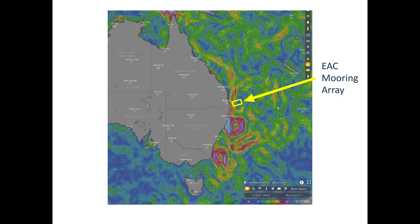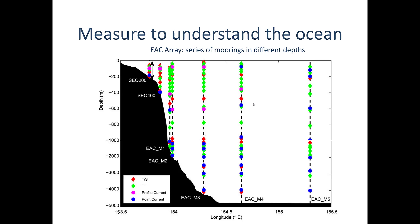CSIRO and IMOS have installed a subsurface mooring array — the EAC East Australia Current mooring array — off the coast of Brisbane in Australia, to measure this current and try to characterize what's happening and the changes in time. There are many subsurface moorings in this array, covering a range of water depths from a few hundred meters all the way to full ocean depth covering thousands of meters. If you really want to understand what's happening to the ocean, you have to make measurements. These feed into numerical models of the ocean, but you've got to get data at some point.